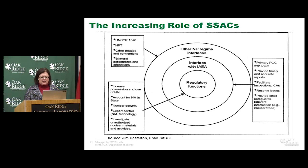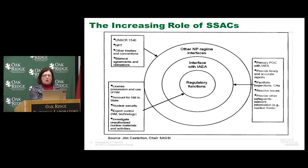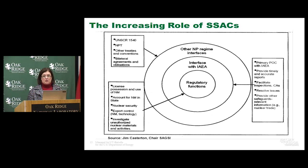This is my last slide. I took it from a presentation by the former chair of the Standing Advisory Group on Safeguards Implementation of the agency. It's a very simple diagram which shows that the core is the responsibility of the state systems of accounting and control. We talked about the license of possession and use of nuclear material, the accounting of nuclear material system, nuclear security, expert control of both nuclear material and technology, and investigation of unauthorized nuclear materials and activities. All of these are responsibilities of the core, which is the SSAC regulatory functions.